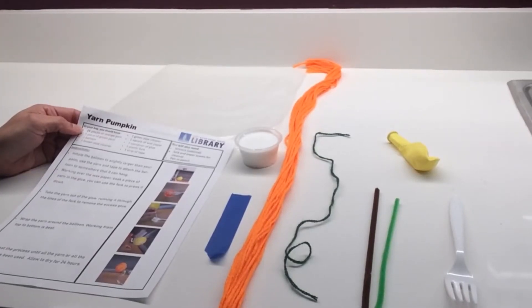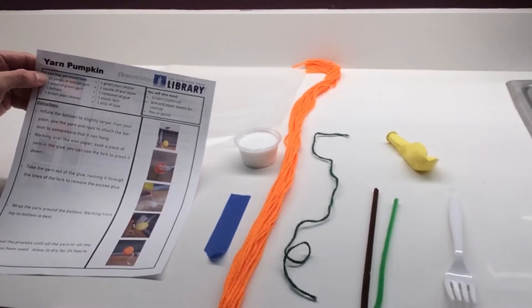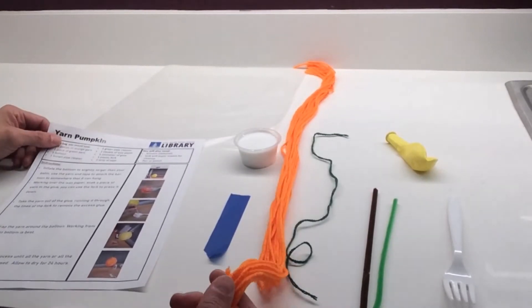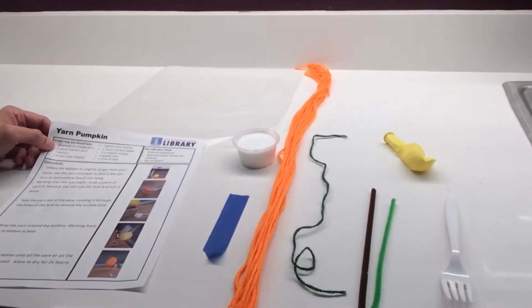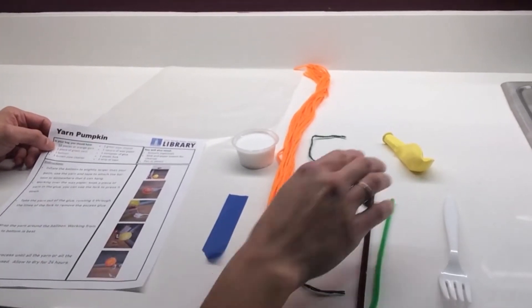If you picked up a kit from the River Center Branch Library, you should have a set of instructions, 16 pieces of pre-cut yarn, one piece of green yarn, and one balloon.